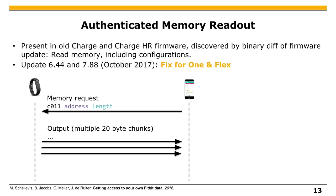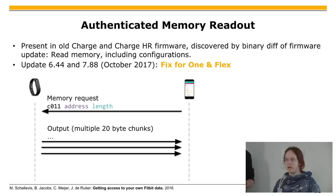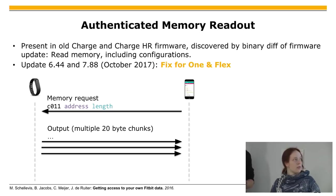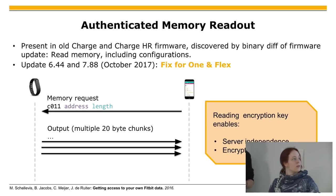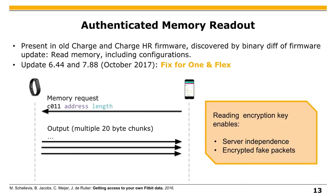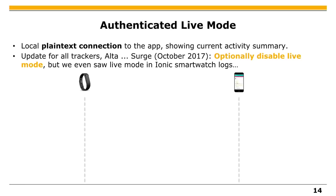The fun part: there is an authenticated memory readout in the app. After authentication, you send a command saying 'please give me all memory contents from here to there.' If the range is too long it stops at a certain point, but until then it replies with everything. You can read out the EEPROM and the flash. Most importantly, on vulnerable trackers you can also read out the encryption key, and then you can do everything the server does — encryption and all — without the server at all.